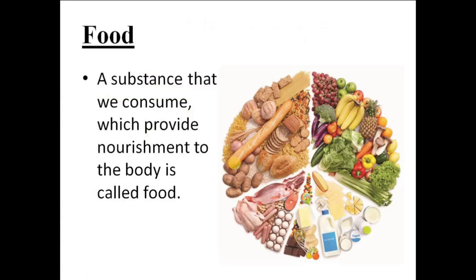So how do we define food? Food is that particular substance that we consume to provide nourishment to our body. In order to get proper nourishment, a diet should include varieties of food items. For vegetarians, the diet may contain vegetables, fruits, cereals, pulses, and milk. For non-vegetarians, the diet may include fish, chicken, meat, and eggs.